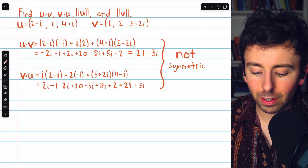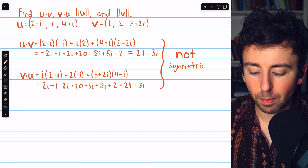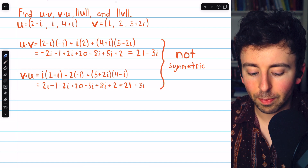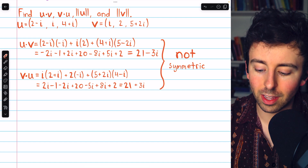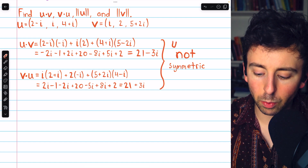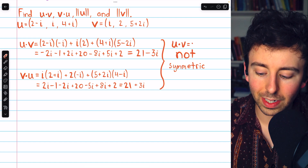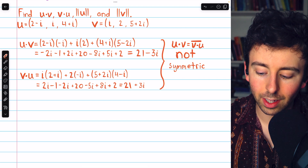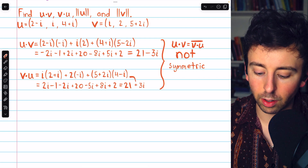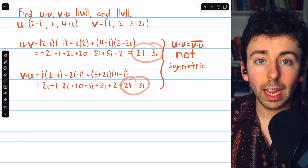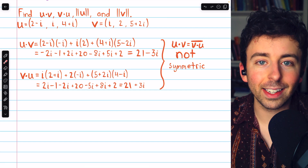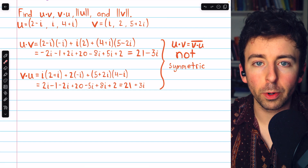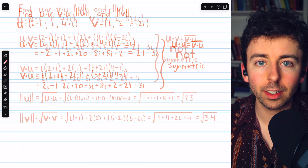You may notice there is still a pretty simple relationship between these things. u dot v doesn't equal v dot u, but u dot v does equal the conjugate of v dot u. This is true in general — it's called the anti-symmetry property of the complex dot product.